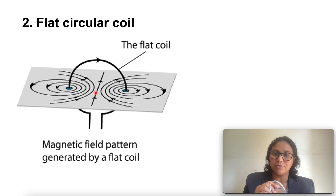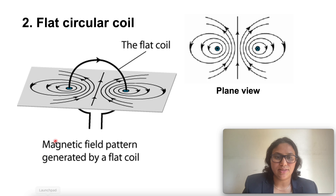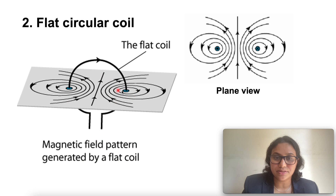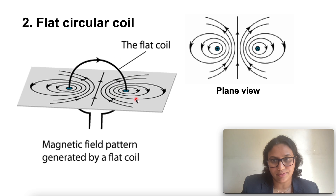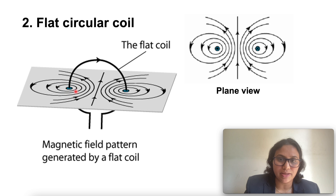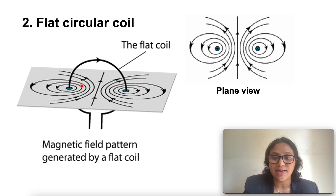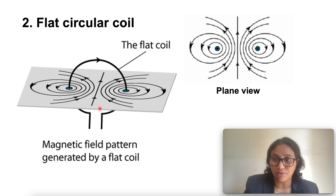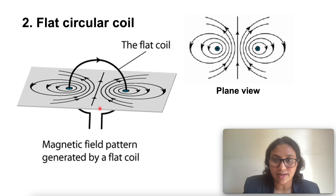By applying the right hand thumb rule, every section of the wire contributes to the magnetic field lines in the same direction within the loop. This is the magnetic field pattern generated by a flat coil — the concentric circles represent the direction of the magnetic field around the current carrying conductor. We know that if there is a circular coil having N turns, the field produced is N times as large as that produced by a single turn.